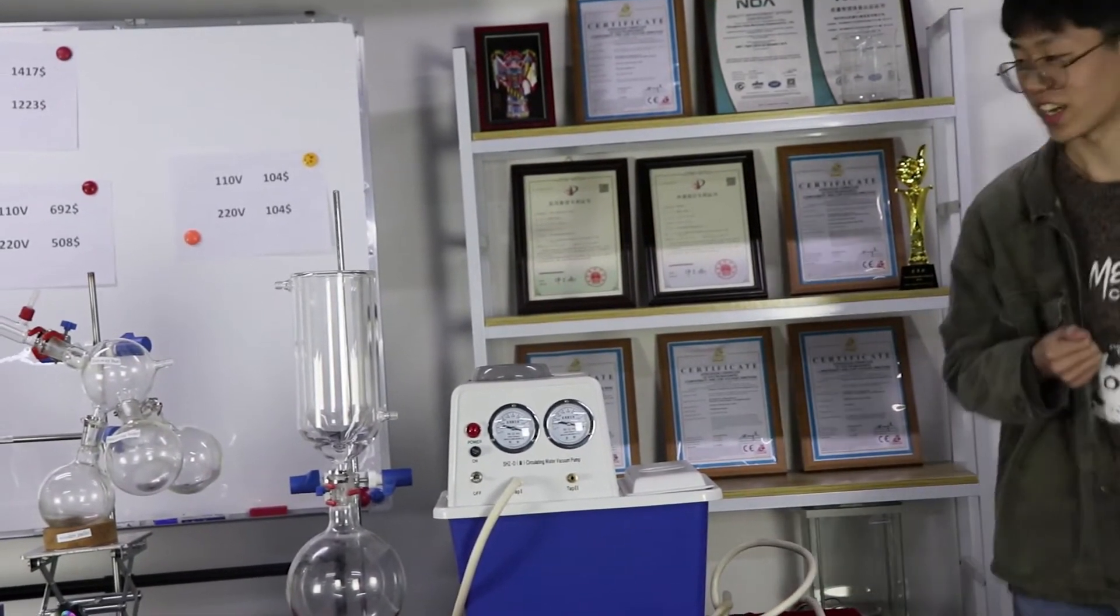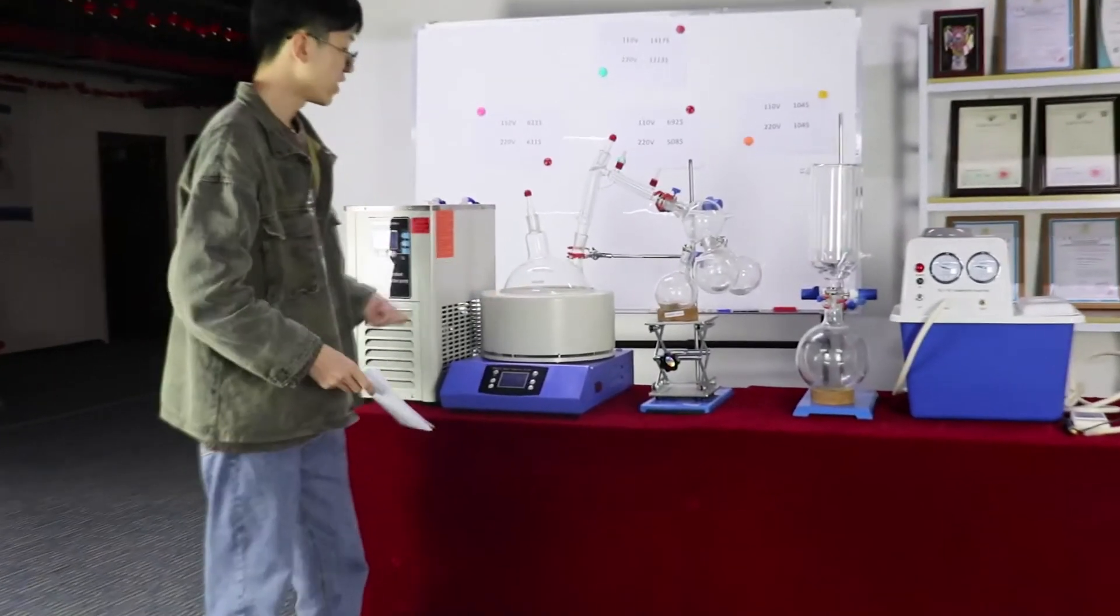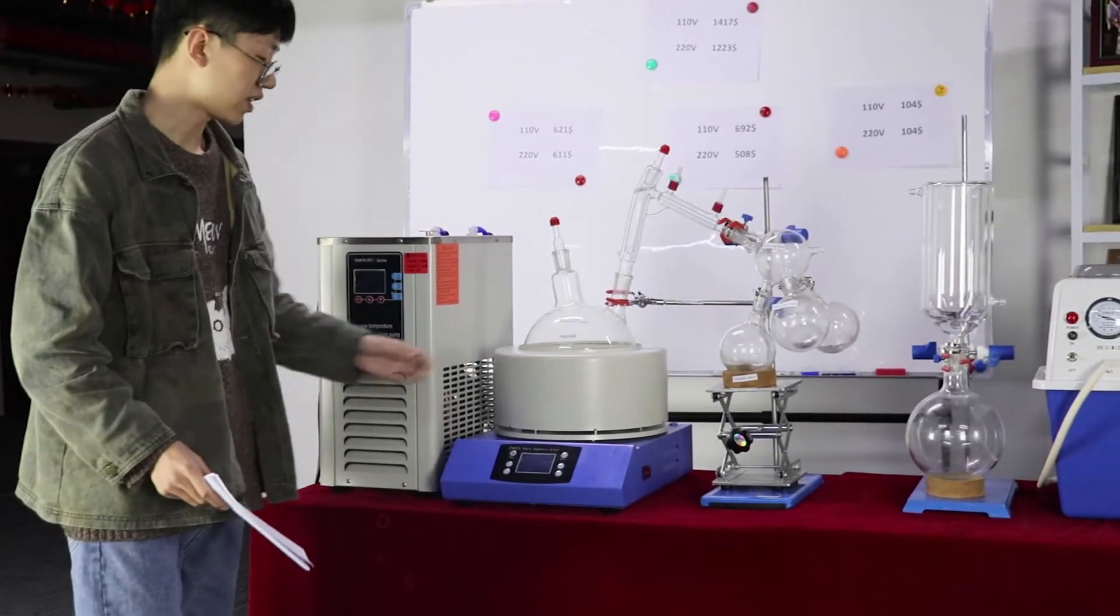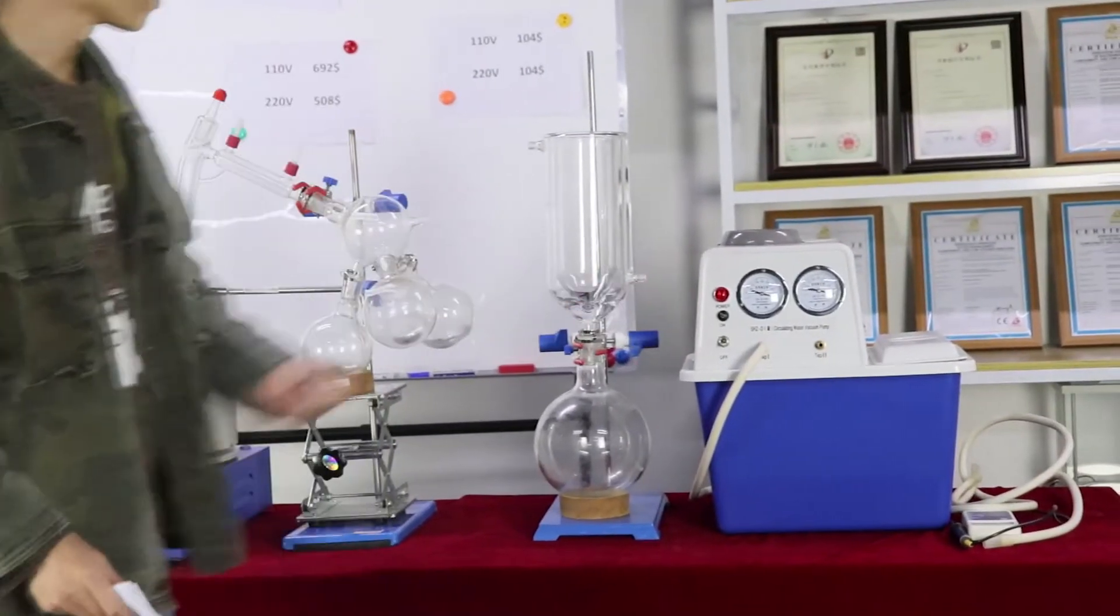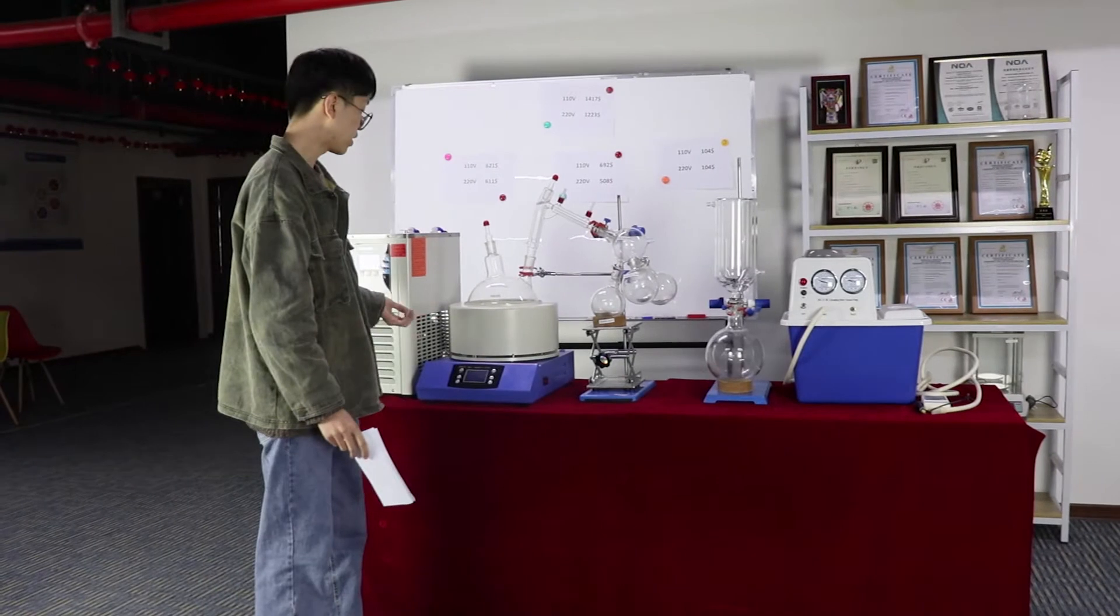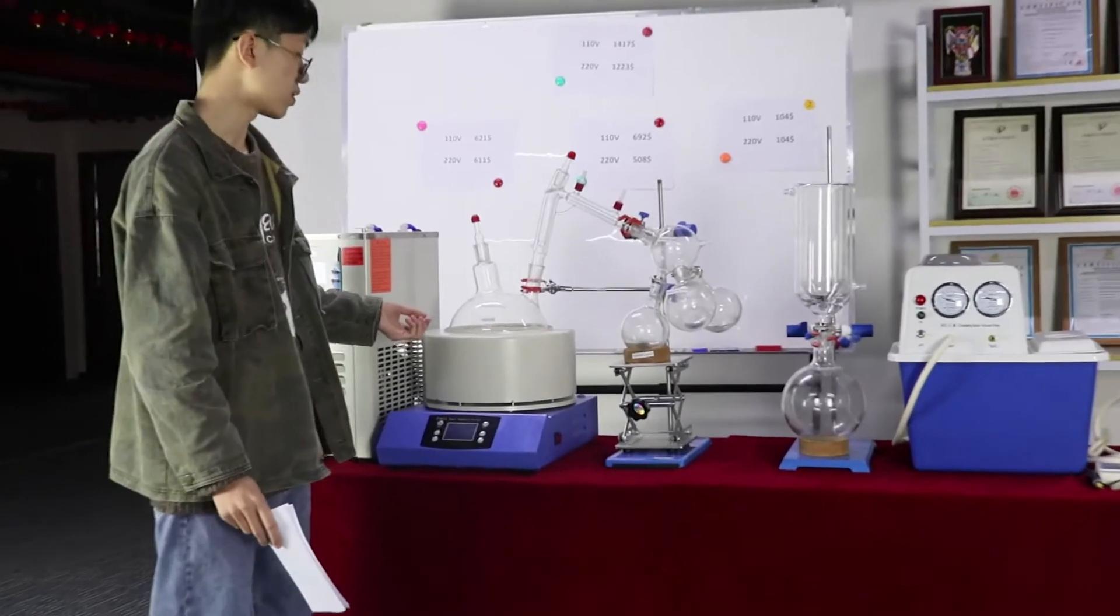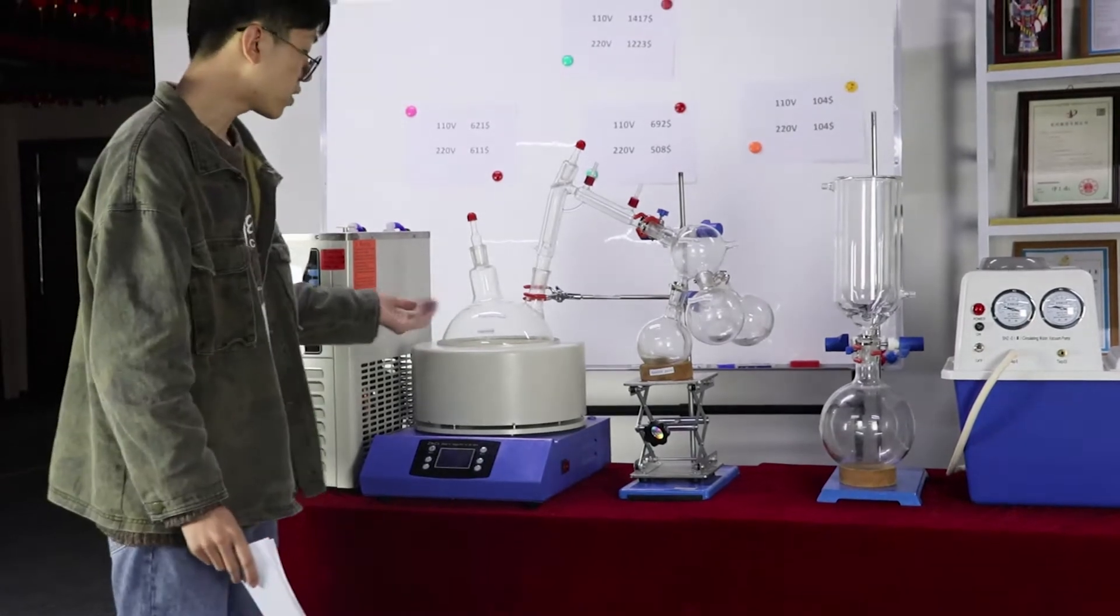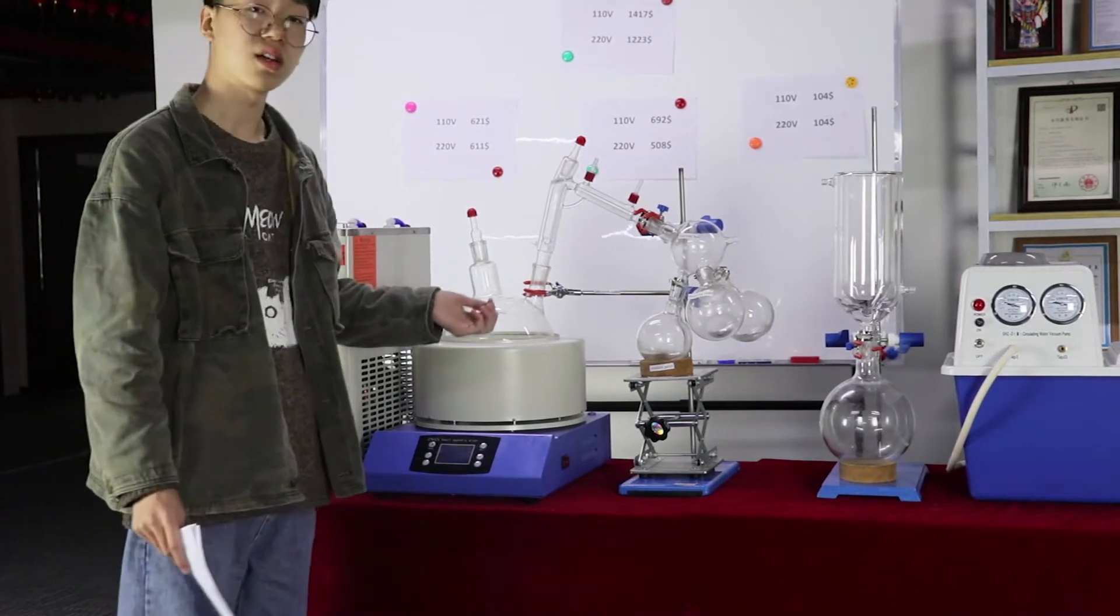Okay, as we say, this is the 5 liter short pass distillation. This is my supporting devices: heating mantle, cooling chiller, and circulating water vacuum pump. First, let me see the short pass distillation. This is my component: an evaporator bottle and magneton. The magneton is in the evaporator bottle. It can store the material.